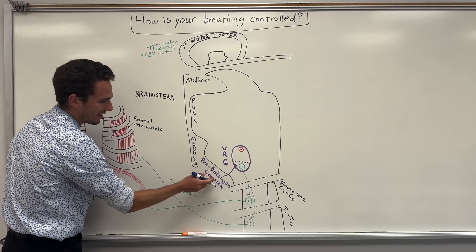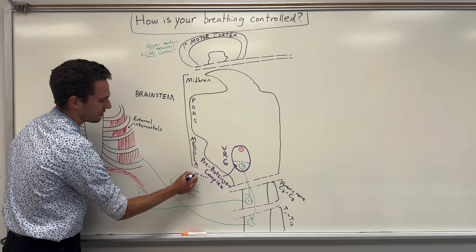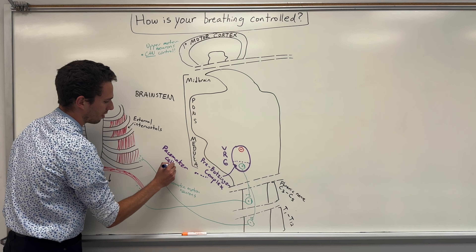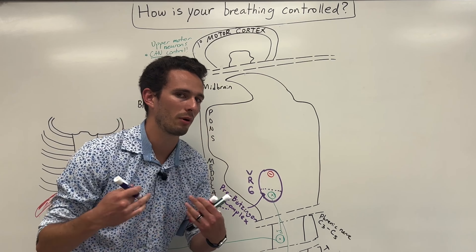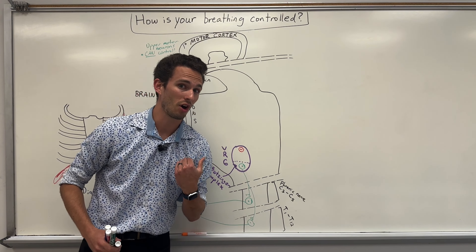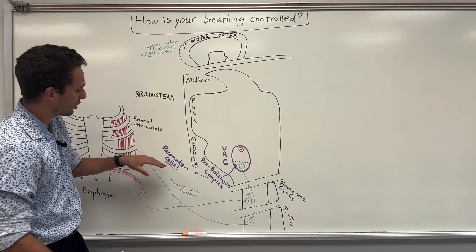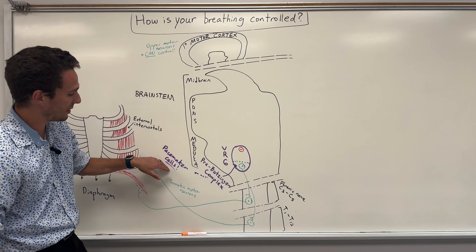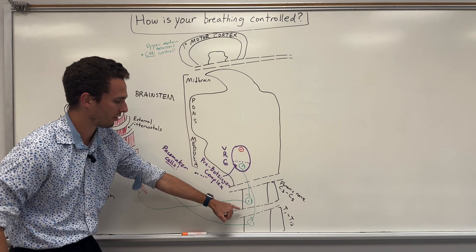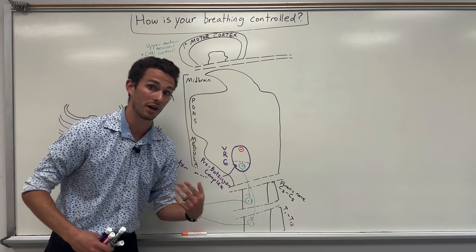So what's interesting is the neurons inside the pre-Bötzinger complex are considered to be pacemaker cells. The only other time we've talked about pacemaker cells is in the pacemaker cells of the heart, which you can learn more about in Cardiac Action Potentials. But the goal of these pacemaker cells is to basically spontaneously stimulate inspiration by triggering these guys to talk to the inspiratory muscles.